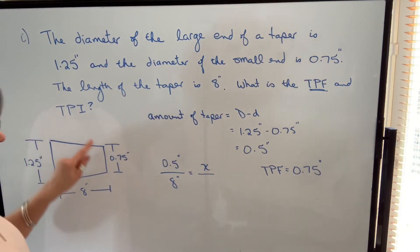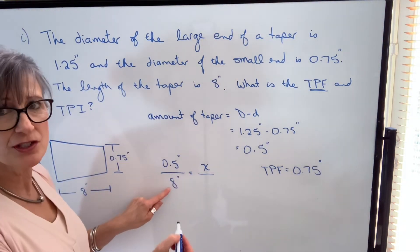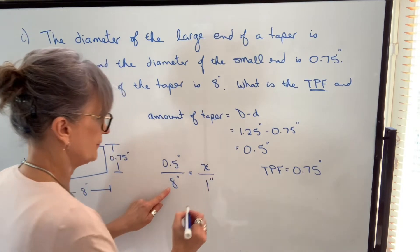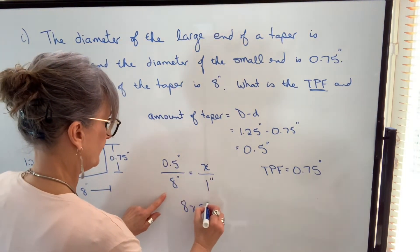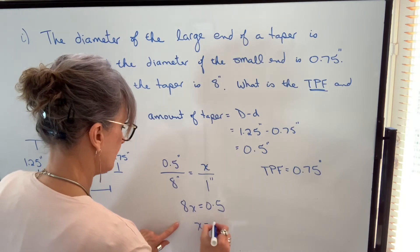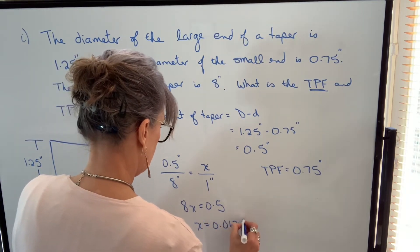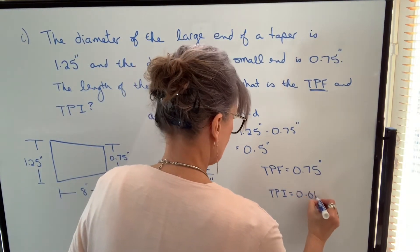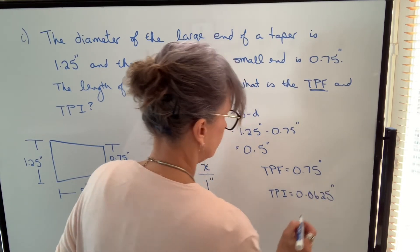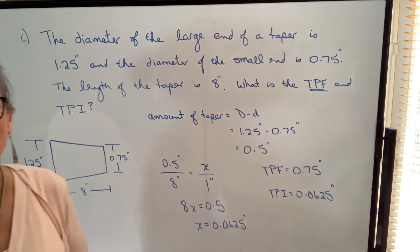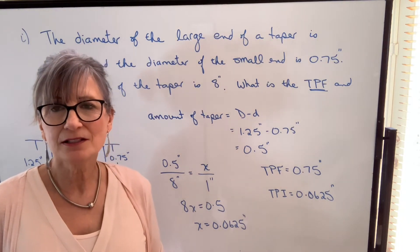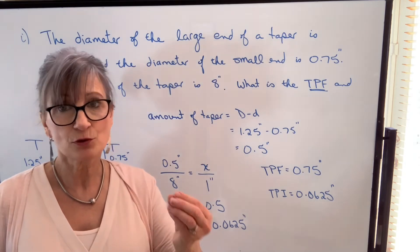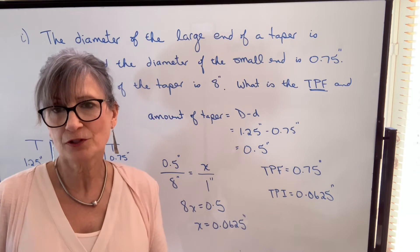If we want to find taper per inch, we still take the amount it tapers over 8 inches and set that equal to how much it tapers over 1 inch. Cross multiply, then divide both sides by 8. Therefore, the taper per inch is 0.0625 inches. We don't need special formulas to calculate taper per inch or taper per foot — we just have to understand that it's a direct proportion. As long as we know how much it tapers over a certain length, we can find out how much it tapers over 12 inches or 1 inch.